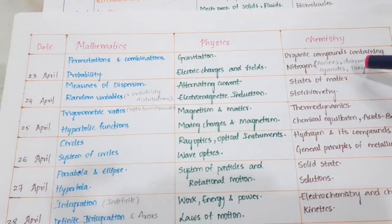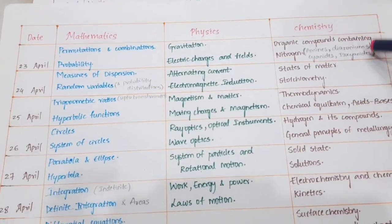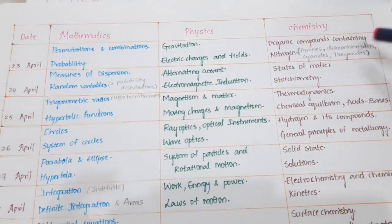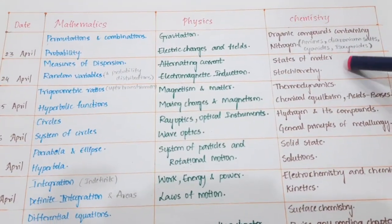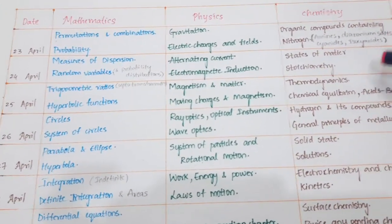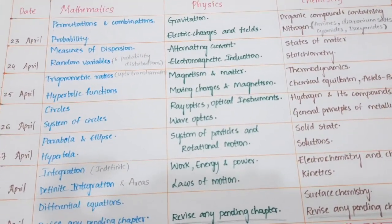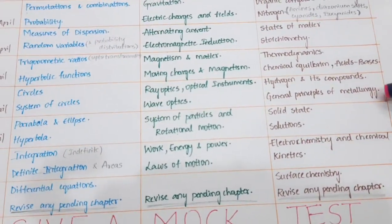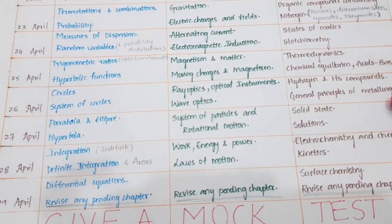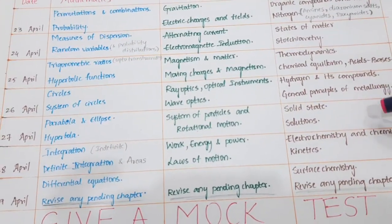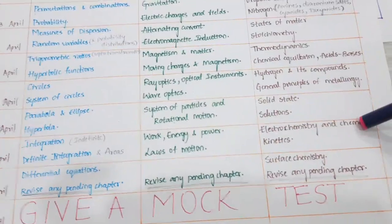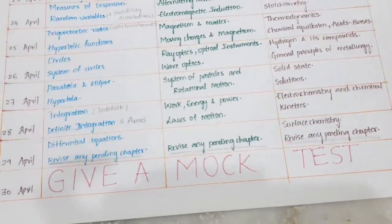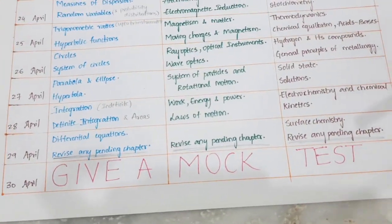21st: Haloalkanes, Haloalkenes, Alcohols, Phenols, and Ethers. 22nd: Aldehydes, Ketones, and Carboxylic Acids. 23rd: Organic Compounds Containing Nitrogen — amines, diazonium salts, cyanides, and isocyanides. 24th: States of Matter, Gaseous States, and Stoichiometry. 25th: Thermodynamics, Chemical Equilibrium, and Acid-Bases. 26th: Hydrogen and its Compounds and General Principles of Metallurgy. 27th: Solid State and Solutions. 28th: Electrochemistry and Chemical Kinetics. 29th: Surface Chemistry and remaining chapters.